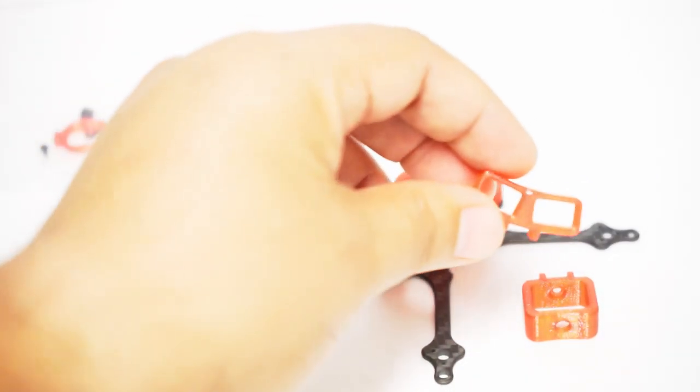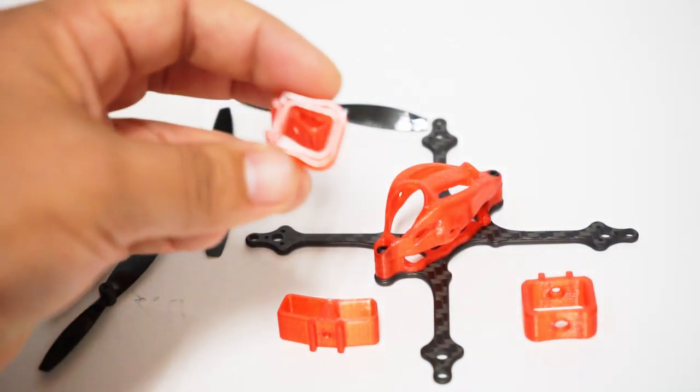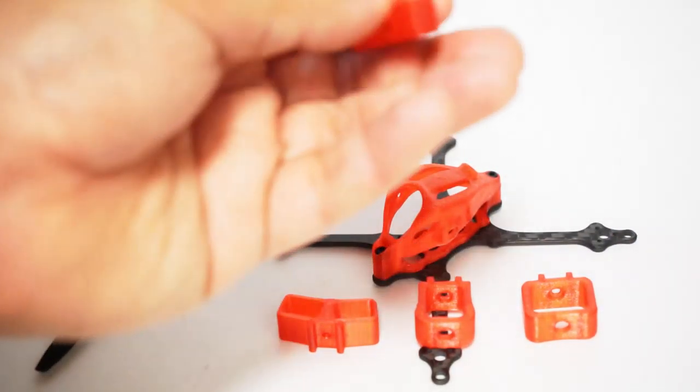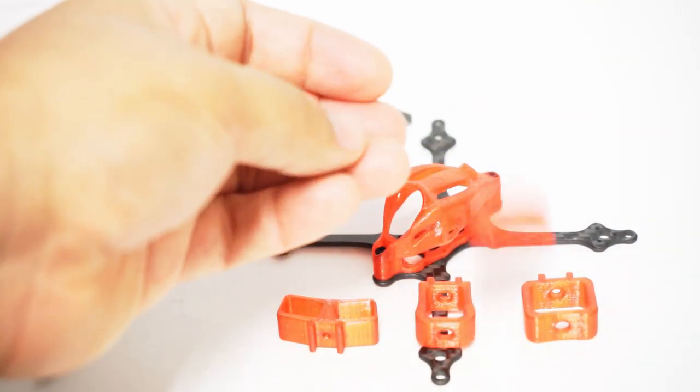This looks like it'd be for a 2S 300 milliamp. This is if you're going to be using two of the 1S 300 milliamps. This is for a longer and thinner, I think this maybe is like a 450.